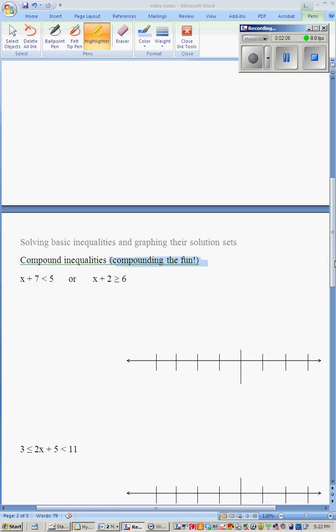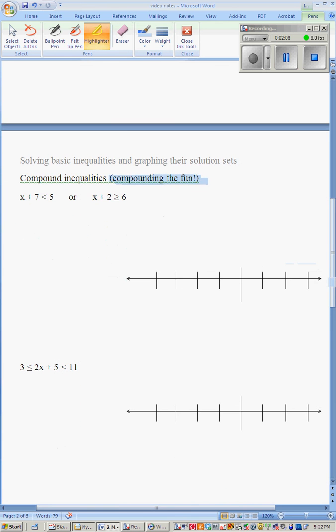So what do those look like when we graph them? Well, for solving, it's going to be the same story. We're just going to, for this or statement, we're just going to solve each problem on its own. And we'll get x is less than negative 2.